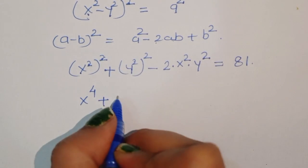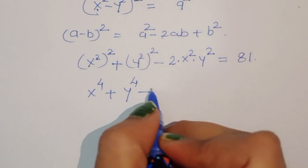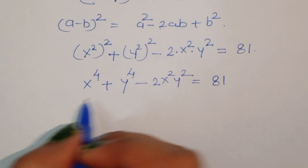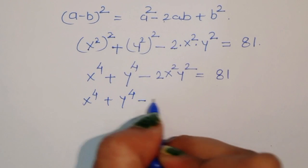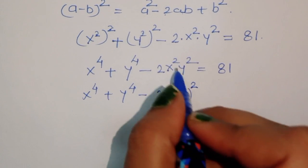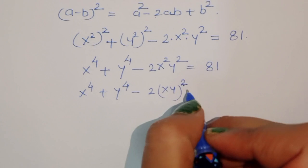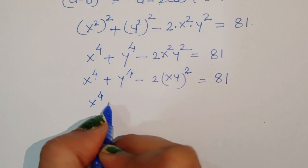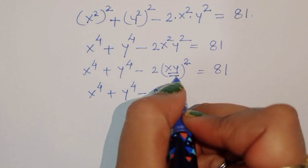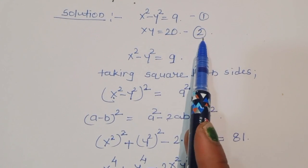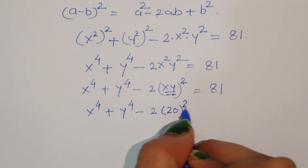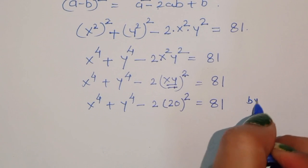So we get x to the power 4 plus y to the power 4 minus 2 x squared y squared equals 81. Now we can write 2 x squared y squared as 2 times xy whole squared. The value of xy is equal to 20, as given in equation number two, so we substitute that value.